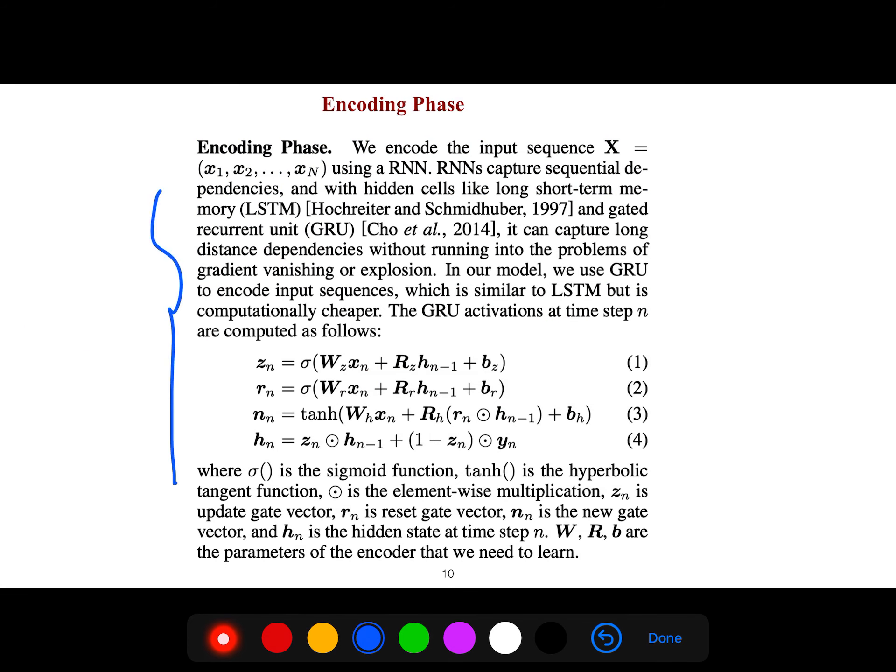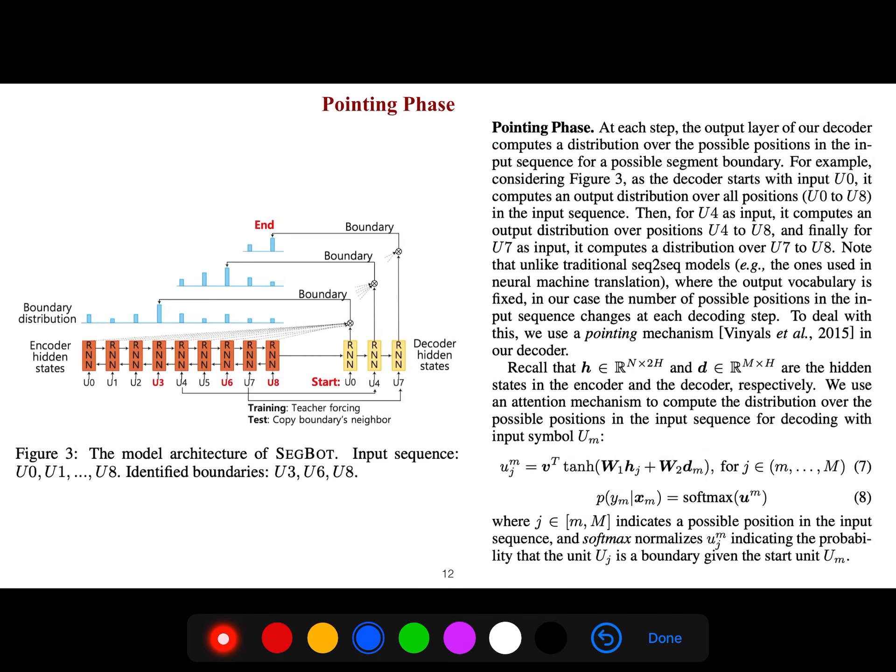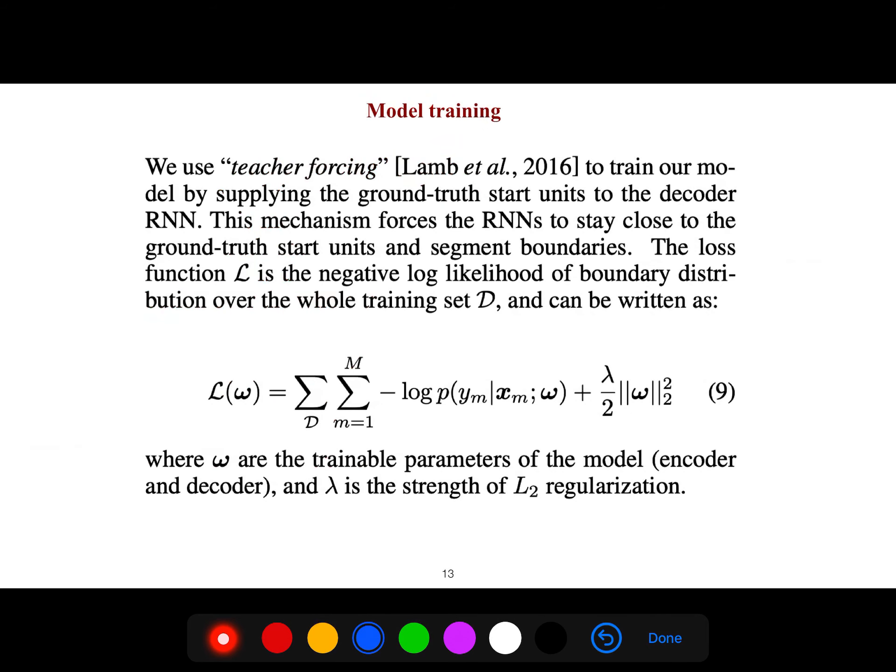Encoding phase, as I said, it's LSTM. I'm repeating all of these again. Encoding phase uses GRU, and the decoding phase. Finally, the pointing phase. In the pointing phase, we use the idea of pointer networks to point at different boundaries. What is the probability that this is the boundary? In model training, we use L2 regularization. Finally, we reduce minus log likelihood.